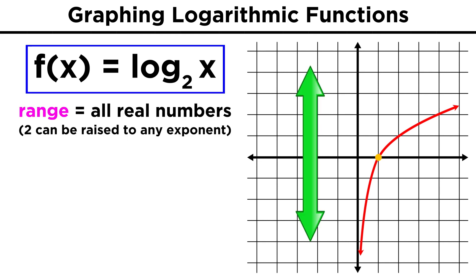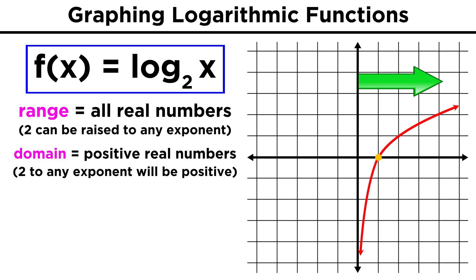Now instead of having a domain that includes all real numbers, it is the range that includes all real numbers, because the base can be raised to any exponent. However, the domain includes only positive real numbers, because raising the base to any exponent will always produce a positive number, so this function stays to the right of the y axis.